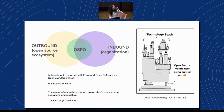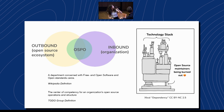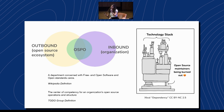There's a point where organizations need to know how to interact with the open source ecosystem and how they can better help and sustain the infrastructure and community supporting them. The OSPO is, in general terms, the link between the organization and the open source ecosystem. Wikipedia describes it as a department concerned with free and open source software and open standards. The ToDo Group defines it as a center of competency for an organization's open source operations and structure.